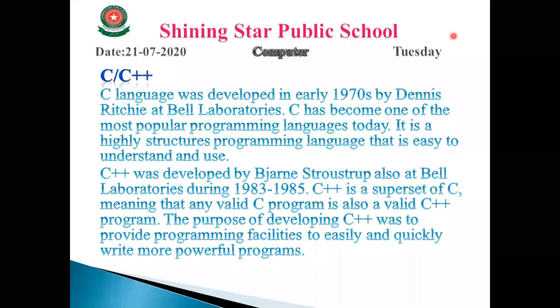In assembly language, when we write a program — say five steps — the computer cannot understand the assembly language directly. So the computer uses a translator called the assembler to convert the code into something the computer can understand. Just as we use an assembler in assembly language, in C language and C++ language we use the compiler.